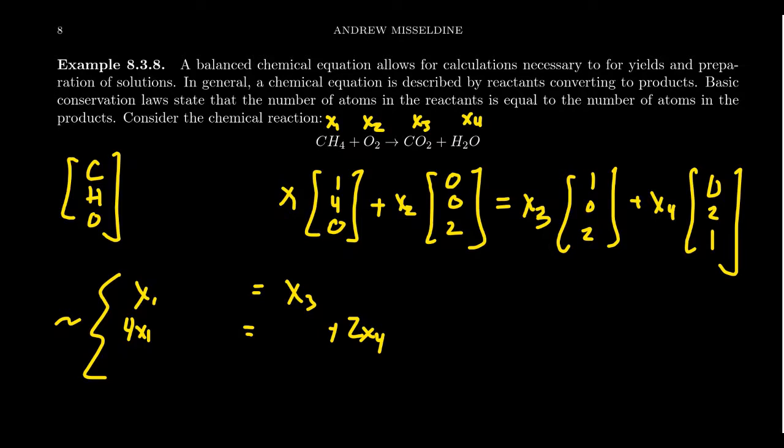Finally, you'll get a third equation for the oxygen inside of this problem here, for which no oxygen came from the methane. All of the oxygen came from the oxygen molecule, so you get 2X2. But on the right-hand side, you're going to have 2X3 and then you're going to have 1X4.